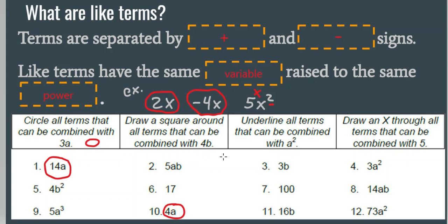Let's try the next one. Draw a square around anything that can be combined with 4b. I found two that you can combine with 4b — a 3b and a 16b. Both of those just have a b, just like this, so they have the same variable raised to the same power.